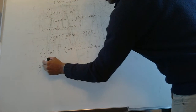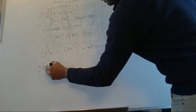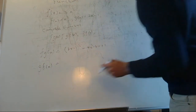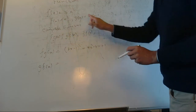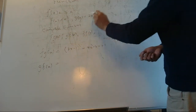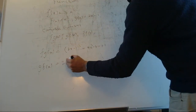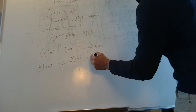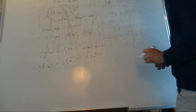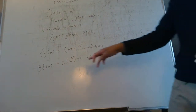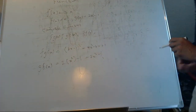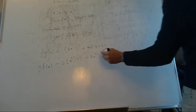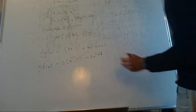Now g of f of x means function f goes into function g wherever there's x, so it would be 2(x squared) minus 1, which gives 2x squared minus 1. You can see f of g of x and g of f of x are not the same — they're very different.